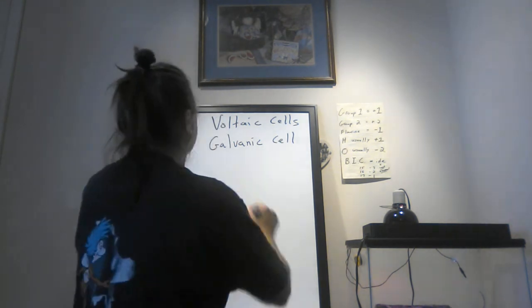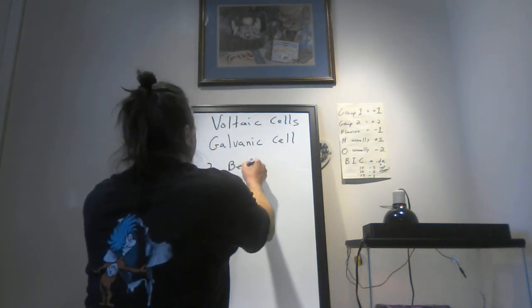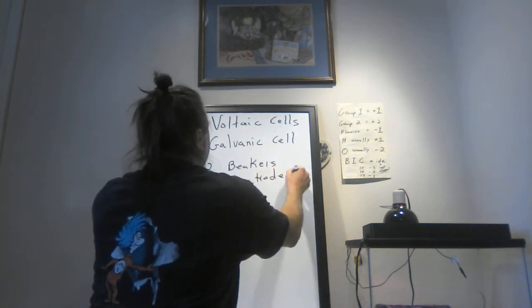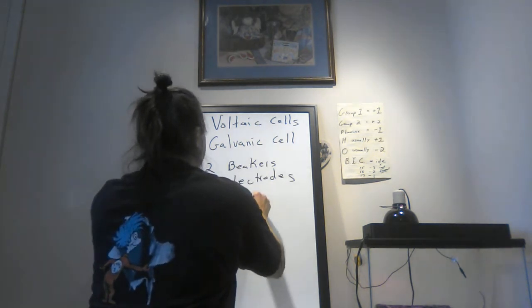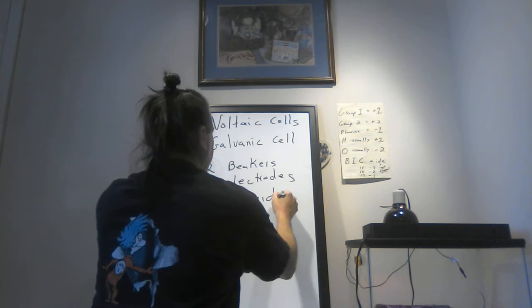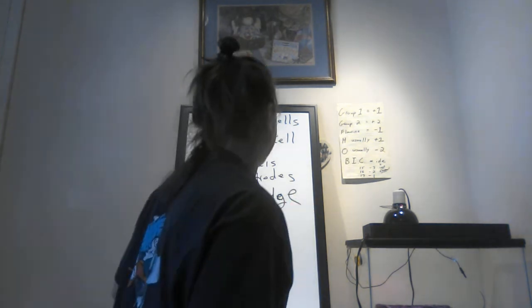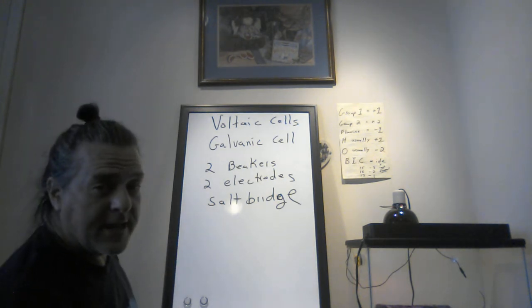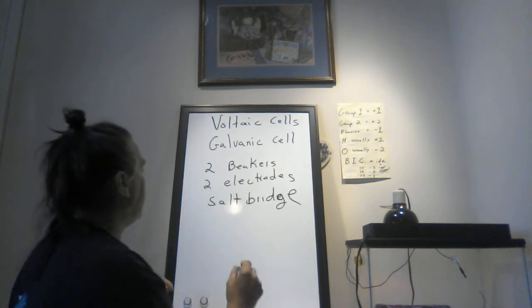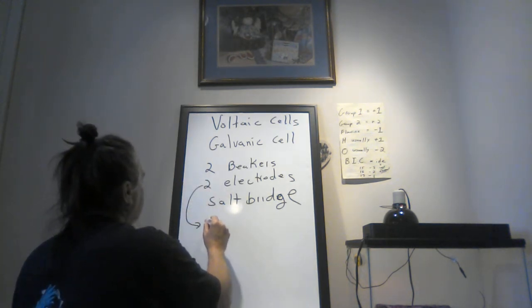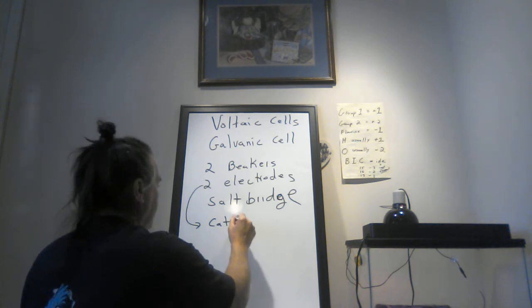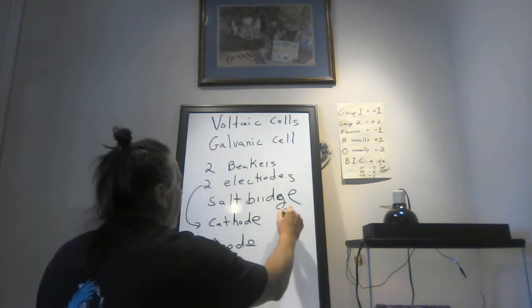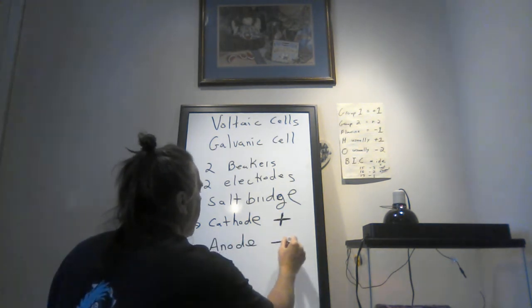In terms of voltaic cells, any cell system that makes electricity is voltaic. Then what we're going to diagram and look at is something called the galvanic cell. The galvanic cell is two beakers, two electrodes, and a salt bridge. Two beakers, two electrodes, salt bridge. That's the galvanic cell. In terms of the electrodes, it's cathode and anode. The cathode is positive, and the anode is negative.